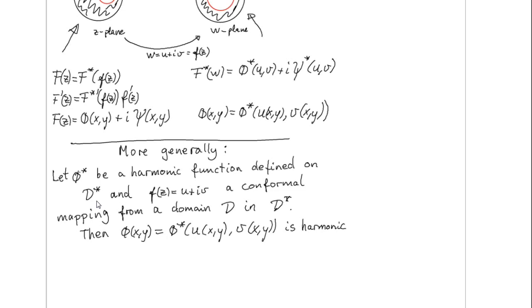and let f of z be equal to this u plus iv, which is assumed to be a conformal mapping from this region d onto this region d star.